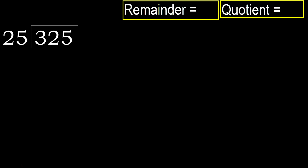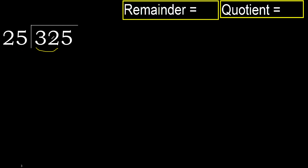325 divided by 25. 3 is less, therefore next. 32 is not less, therefore with 32 — multiply by which number is nearest to 32 but not greater?